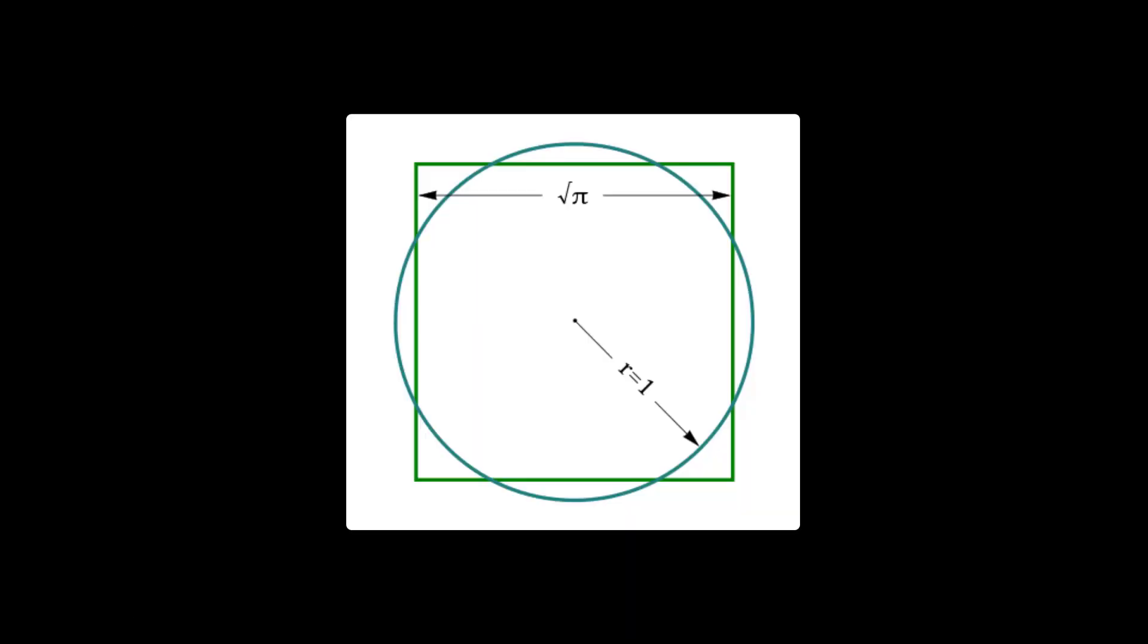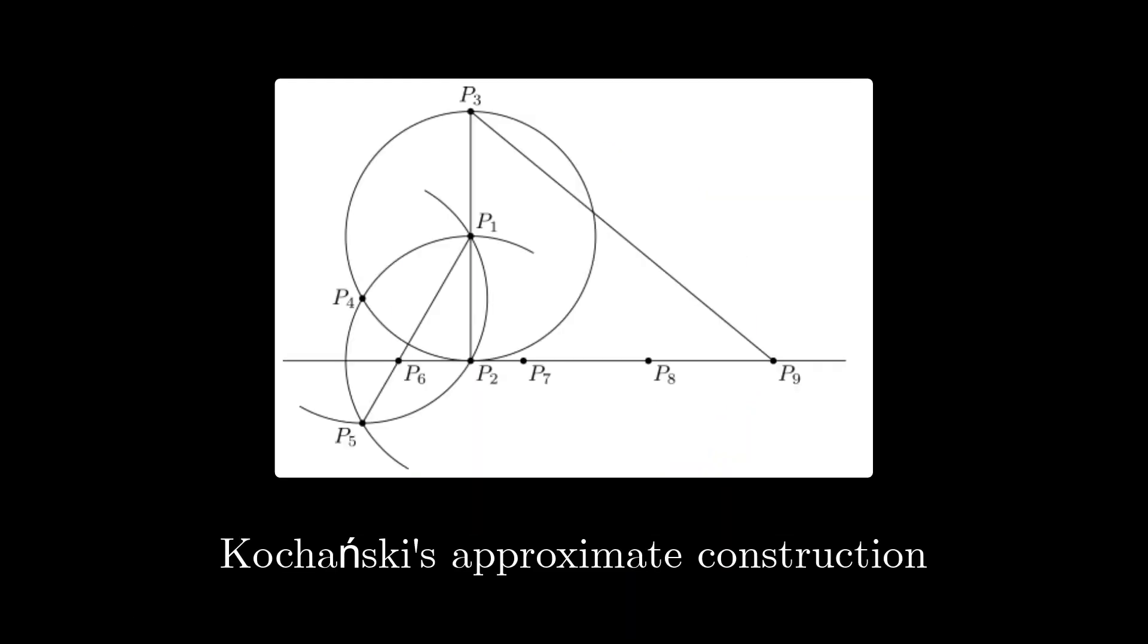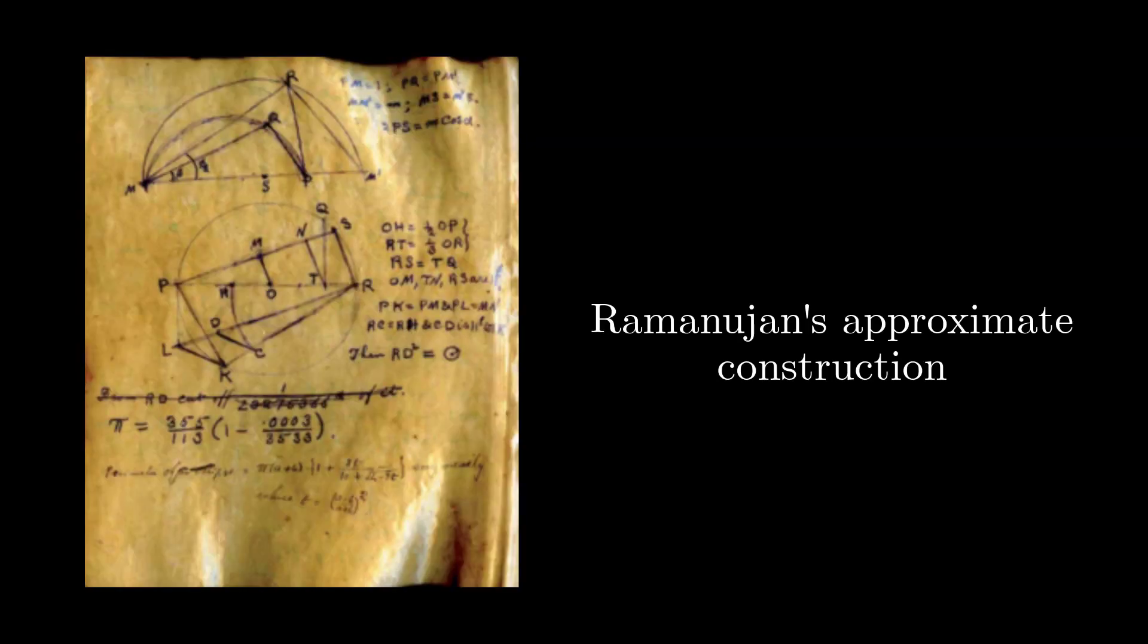Repeated failures in this regard produced the word circle-squarer for a person who tries to accomplish the impossible. It took an additional 2000 years to prove that squaring the circle was impossible.